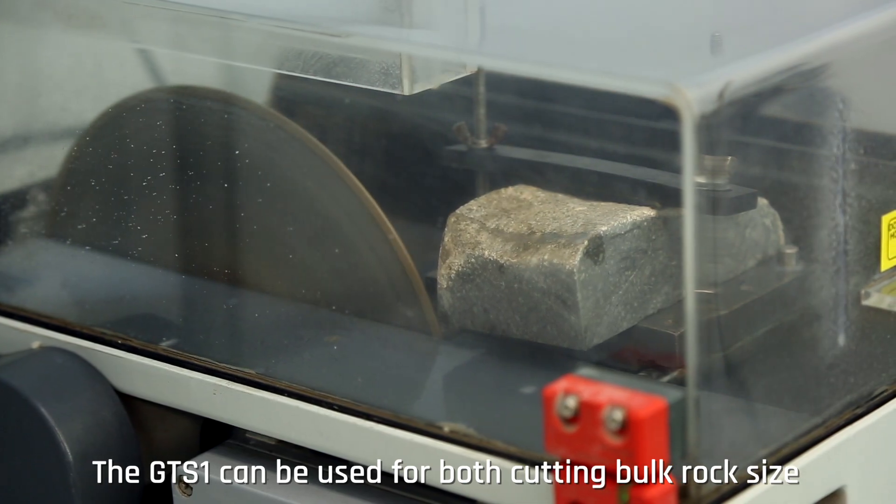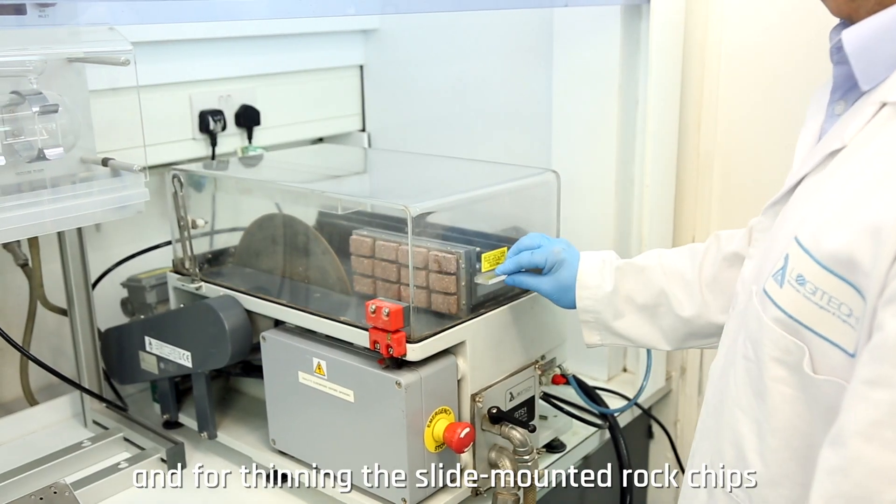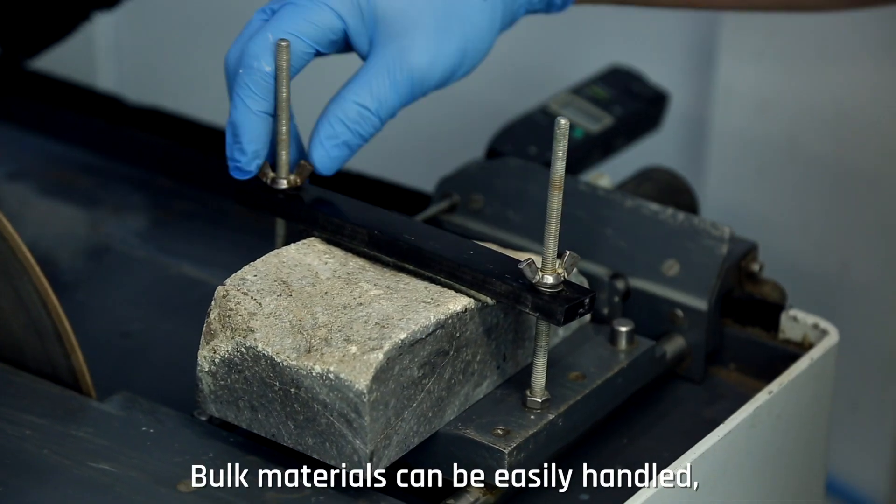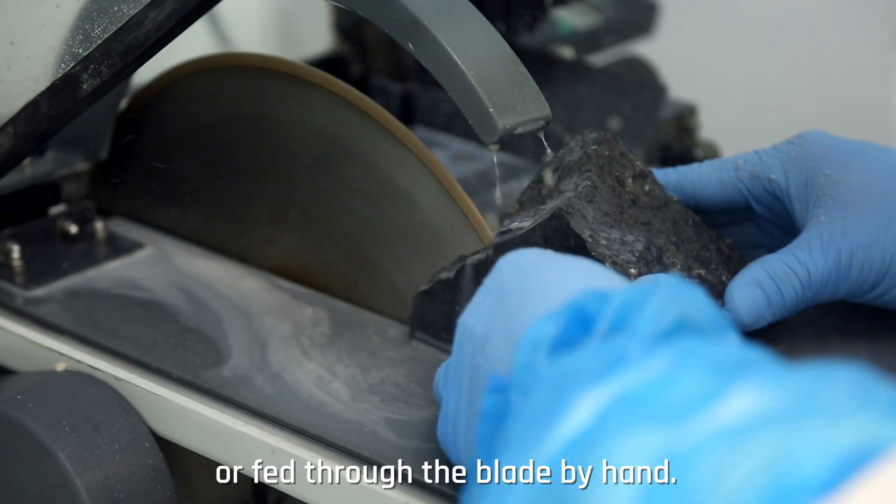The GTS-1 can be used for both cutting bulk rock size and for thinning the slide-mounted rock chips prior to final lapping. Bulk materials can be easily handled by mounting on the sample table or fed through the blade by hand.